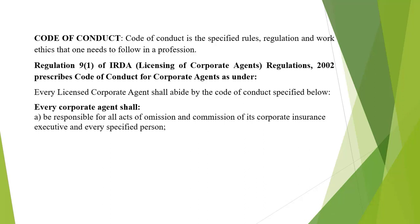Every corporate agent shall be responsible for all acts of omission and commission of its corporate insurance executives. If any employee has committed fraud or wrongdoing, you sue that particular bank or institution — the corporate agent — from whom you purchased the insurance contract. The corporate agent shall be held responsible for all the acts of its corporate insurance executives.